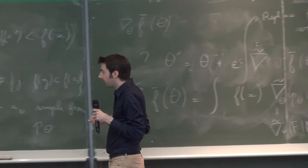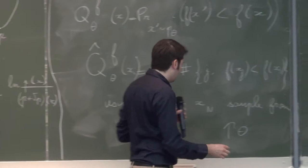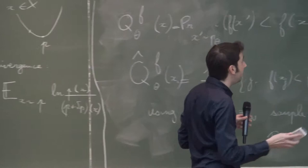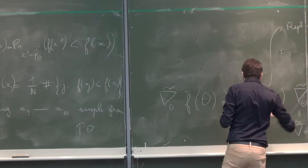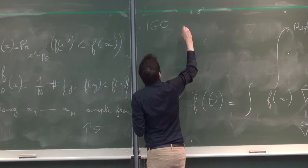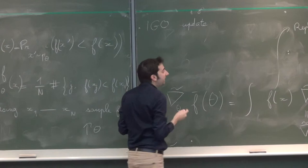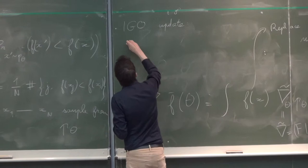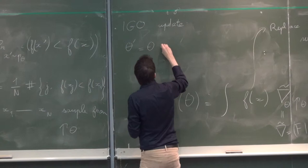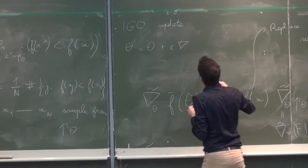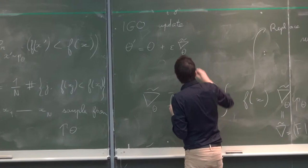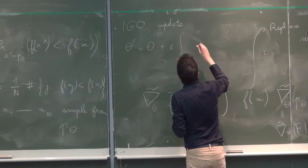To move theta to a new value, and this algorithm is given by a gradient ascent in theta space. So this is the IGO update. So IGO means Information Geometric Optimization. This is theta prime equal theta plus epsilon times the gradient of xi times the natural gradient with respect to theta—oh sorry—times the integral of the quality.